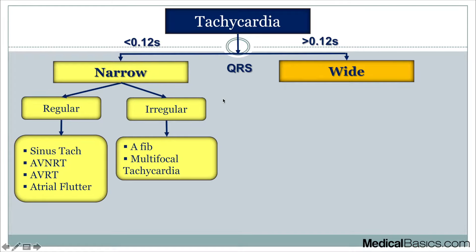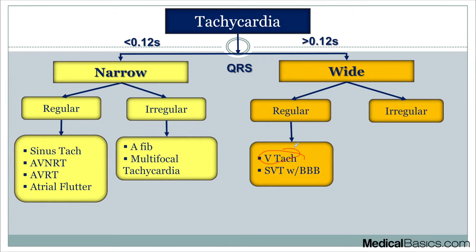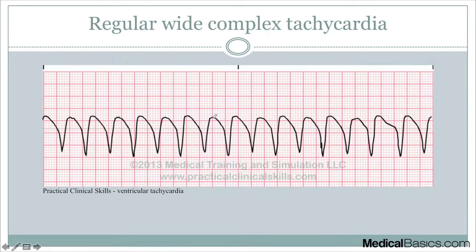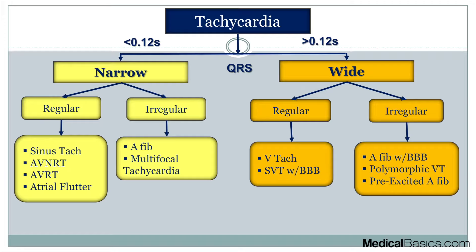When we're dealing with wide complex tachycardia, it's a little more difficult — these are ones you probably haven't seen or have seen very infrequently, so I'll touch on them briefly. Wide complex tachycardia is also broken down into regular and irregular. The most common one to remember is VTAC, but also SVT with a bundle branch block. For VTAC, the QRS is going to be wide and it's still going to be regular — every QRS at a regular distance from one another. For irregular wide complex tachycardia, these include AFib with bundle branch block, polymorphic VT, and pre-excited AFib.